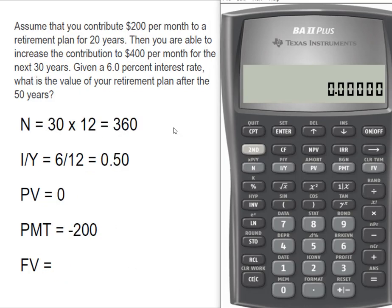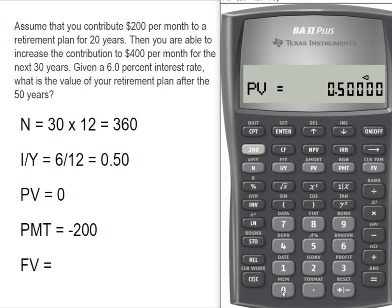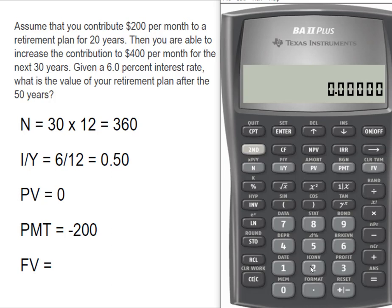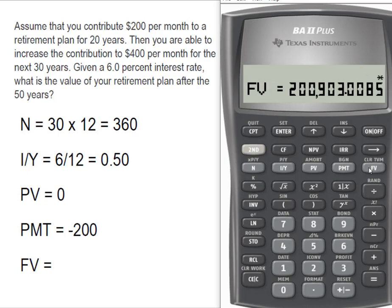We clear our time value of money keys and our N is 360, our interest rate is 0.50. Remember, we're treating this as if it's a new annuity, so our payment is simply that extra $200 a month. Now we compute the future value of that set of cash flows, and that's $200,903.01.